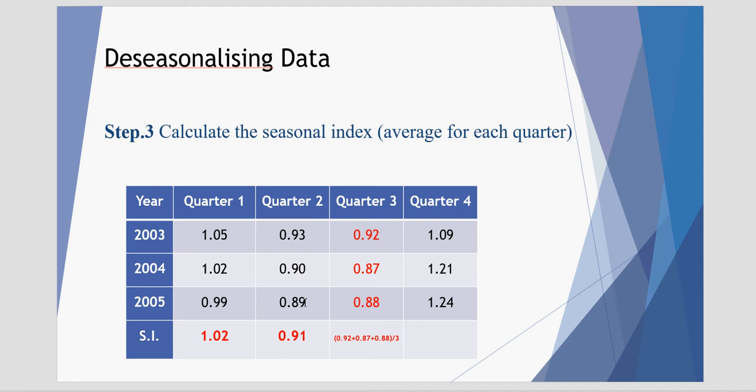That gives us the value of 0.91, and the same for quarter 3 and quarter 4. This shows that, on average, the first quarter is almost what the average predicts. It's 1.02, very close to what we'd expect.